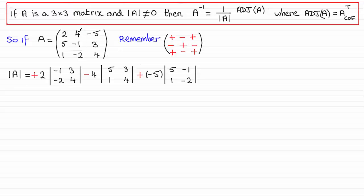Next, you would do the 4 multiplied with its minor, which would be this determinant here, and lastly, you'd take the plus sign here, take the element minus 5 and multiply it with its minor, which was this determinant here.